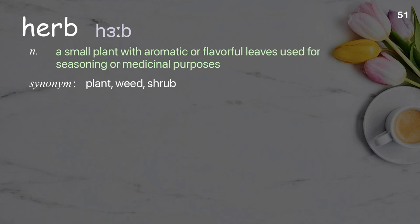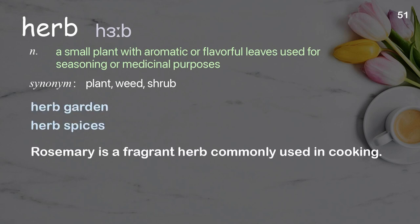Herb: A small plant with aromatic or flavorful leaves used for seasoning or medicinal purposes. Examples: Herb garden, herb spices. Rosemary is a fragrant herb commonly used in cooking.